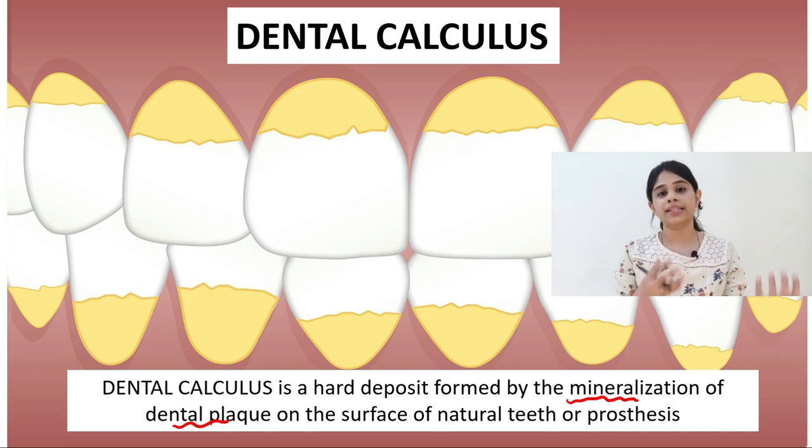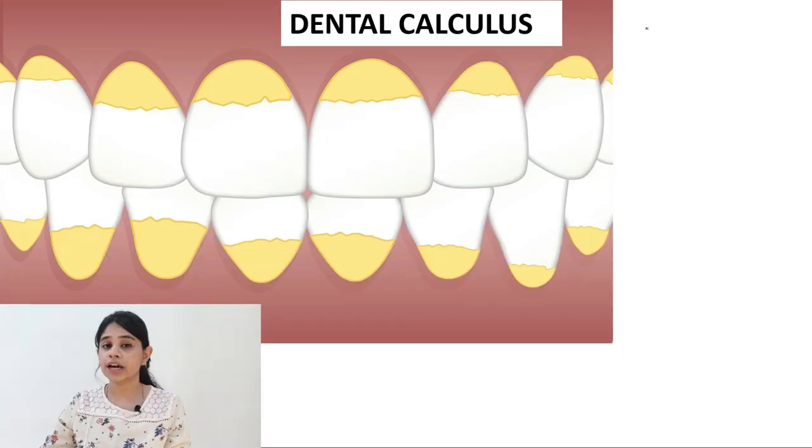And the second part of the definition says that it is formed on natural teeth or prosthesis. So remember, both plaque as well as calculus is only formed on non-shedding surfaces. So you will not see plaque formation and calculus on the gingiva or the buccal mucosa because these are the shedding surfaces. So the epithelium undergoes constant shedding. Whereas if you take restorations, the teeth and the prosthesis, these are non-shedding surfaces which facilitate plaque and dental calculus formation.